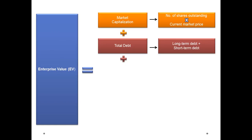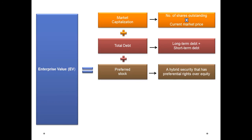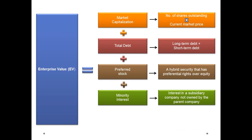After this, we consider preferred stock. Preferred stock is a hybrid security which has some features of equity and some features of debt. It also has preferential rights over equity for dividend and capital distribution. Next, we include minority interest, also known as non-controlling interest. Minority interest is the stake in a subsidiary company not owned by the parent company. For example, ABC owns 70% stake in XYZ, and the remaining 30% stake is minority interest.